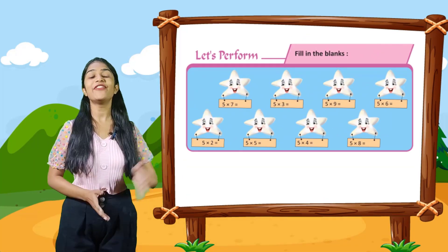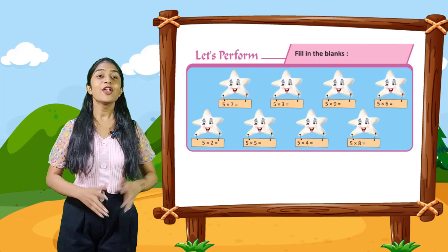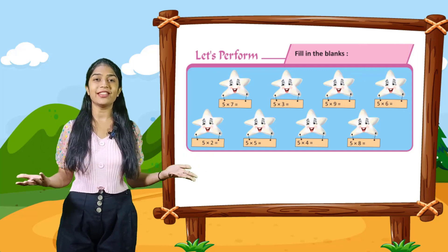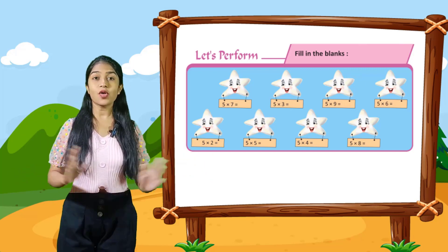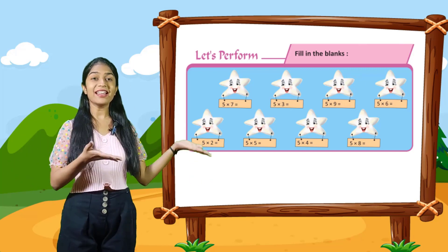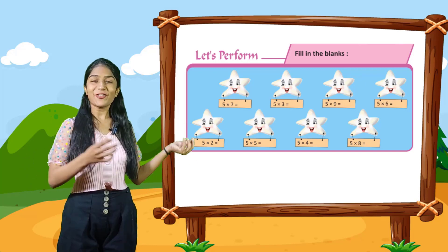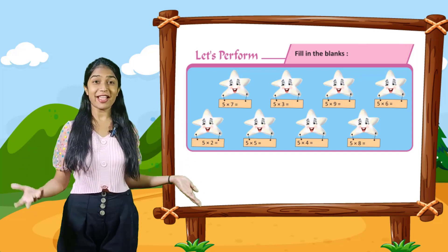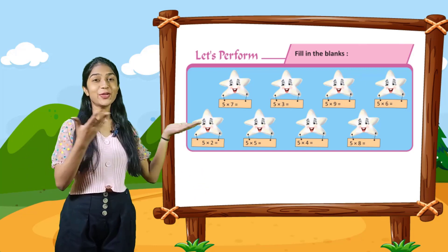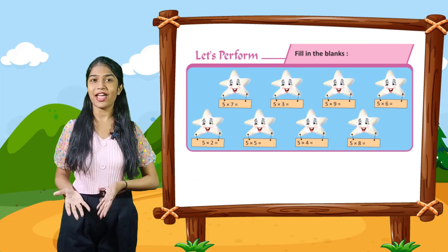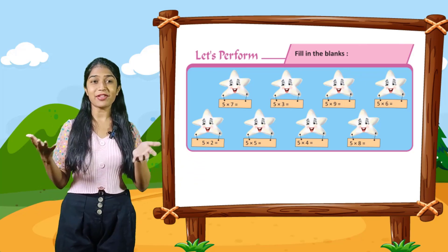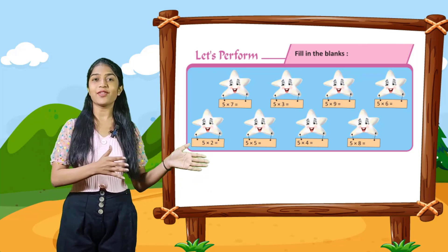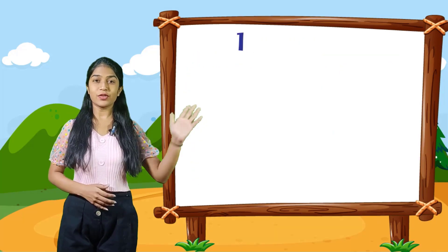Now let's perform. Fill in the blanks. So here are some blanks given to you and you have to fill in the blanks. Here is a star given to you and you have to write the correct answer. For example, 5 into 7 is equal to 35. Rest you have to do yourself.